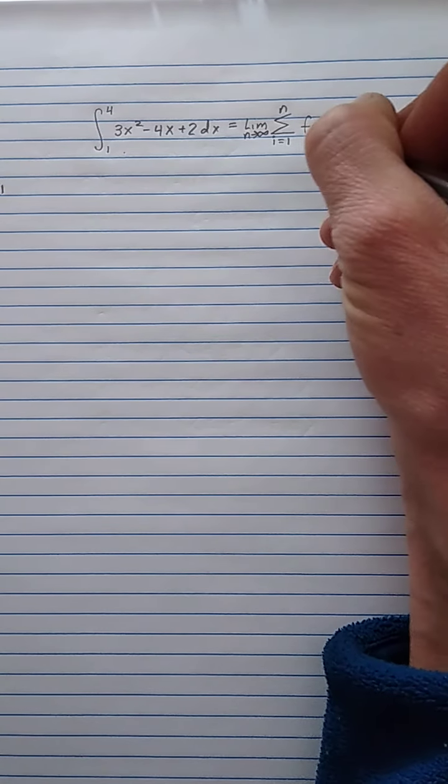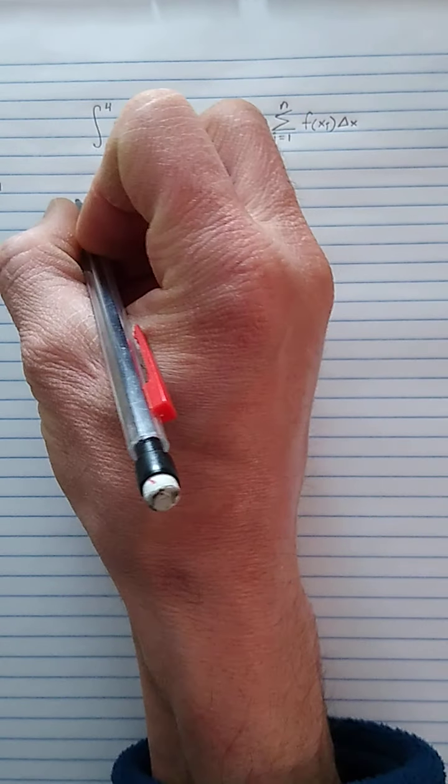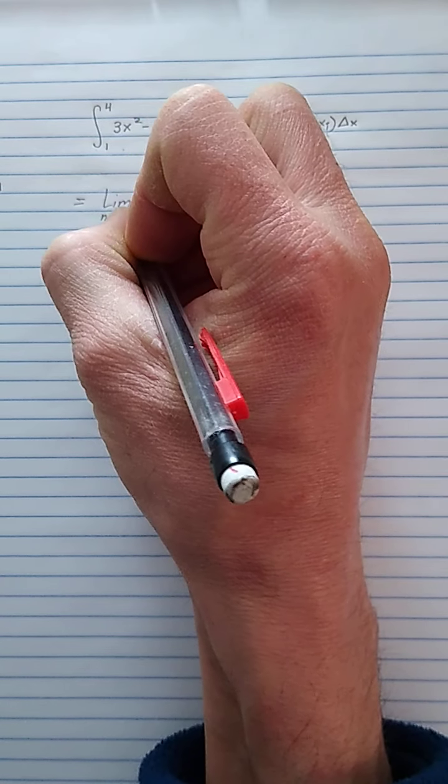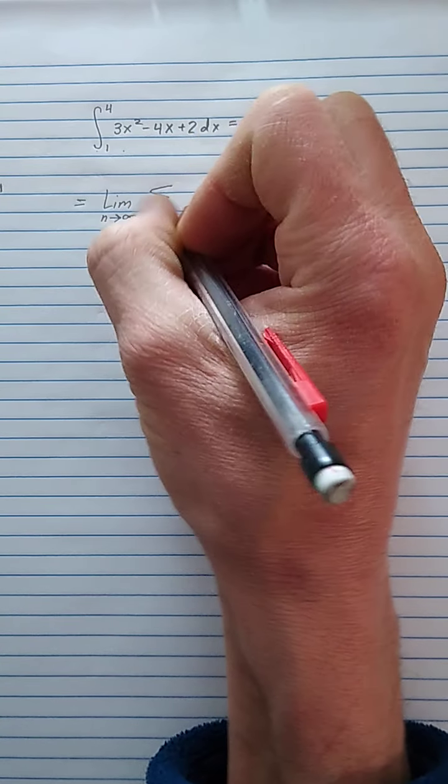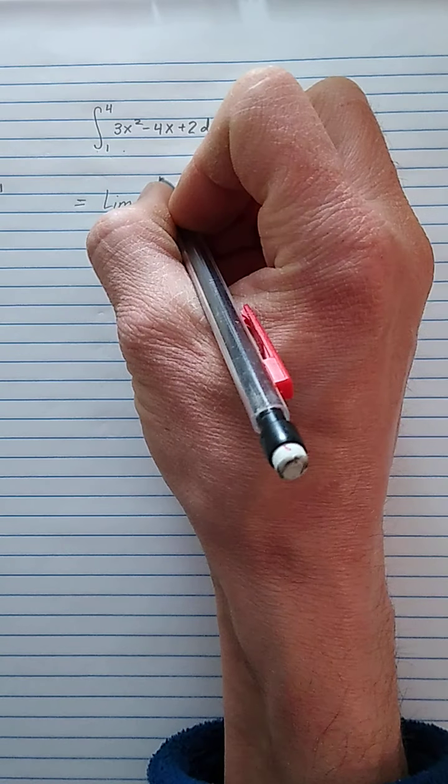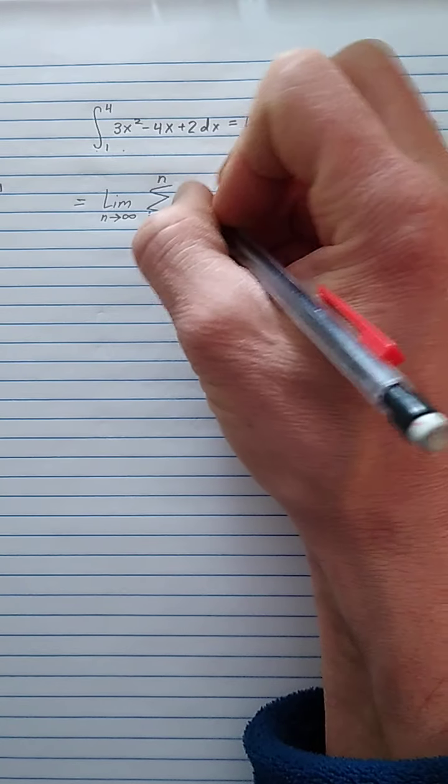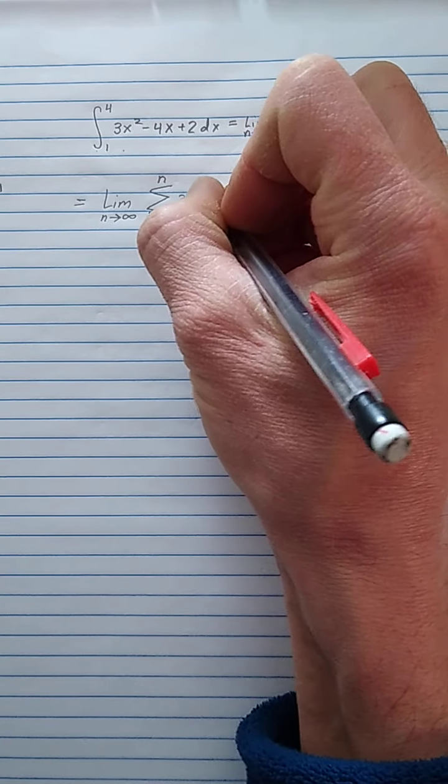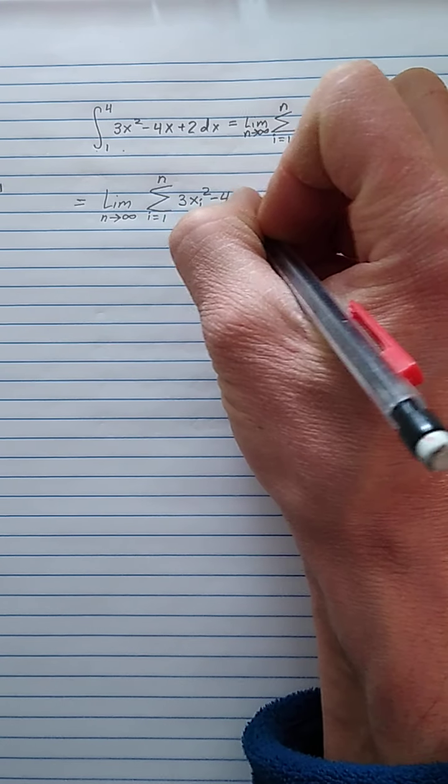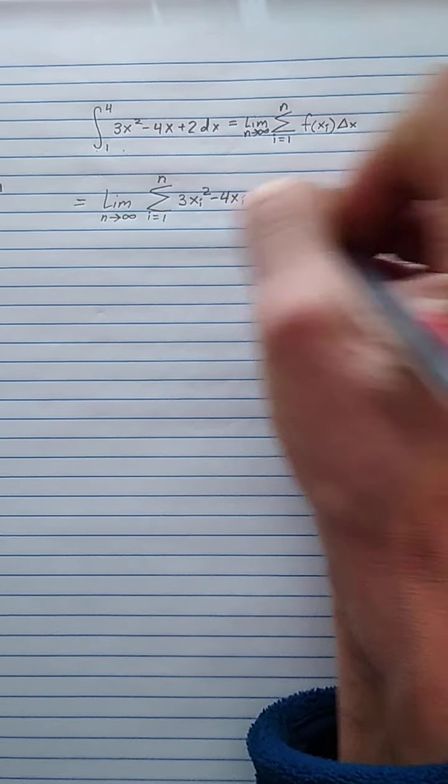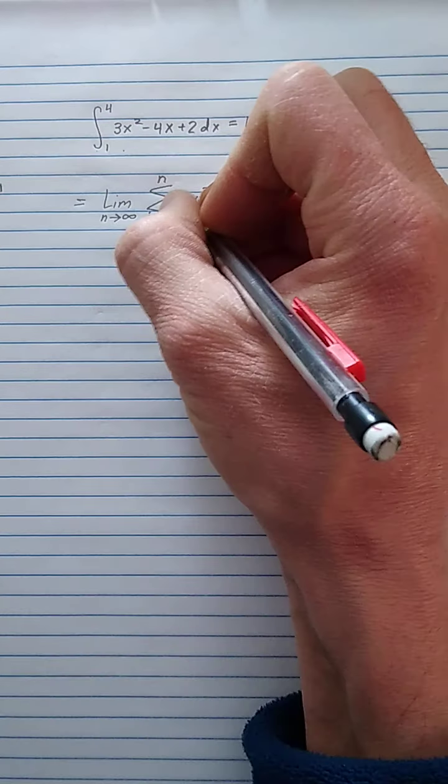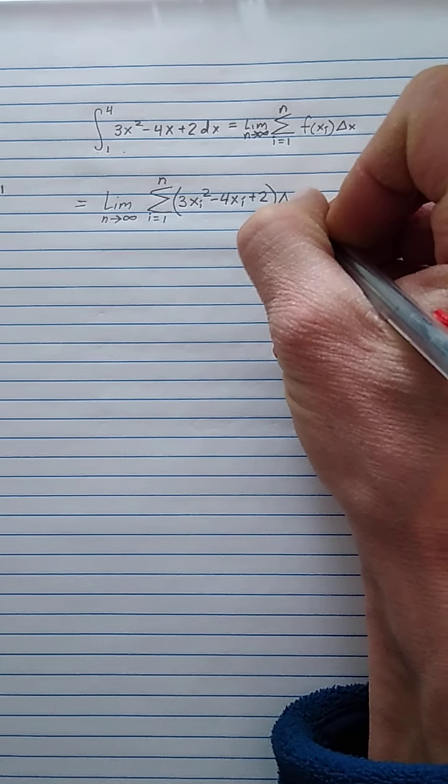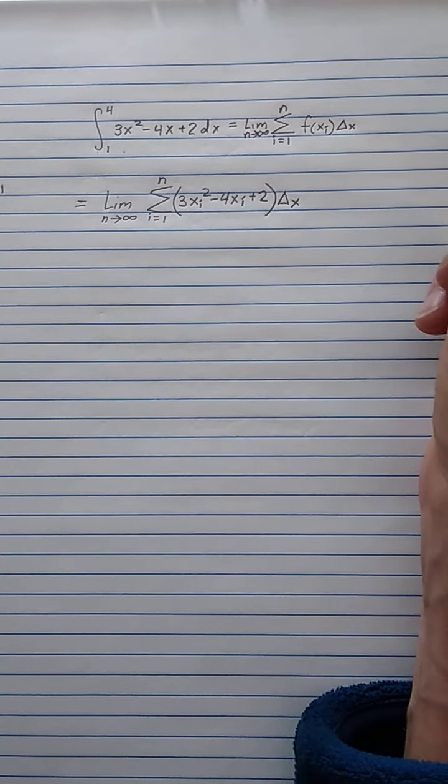Okay, so plugging that in, we get that this integral equals the limit as n goes to infinity of the sum i equals 1 to n, and then we have f plugging in x sub i. So this is going to be 3x sub i squared minus 4x sub i plus 2. And I have to take that all, parentheses are your friend here, times our delta x. Okay, so this is one way we can write the sum.